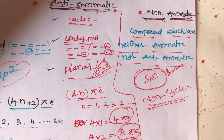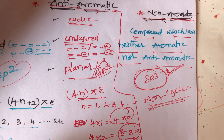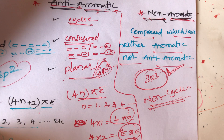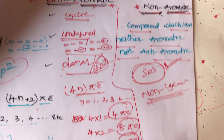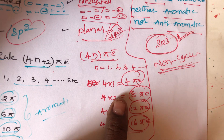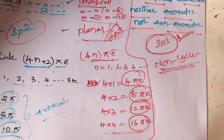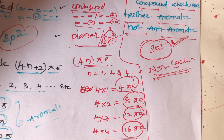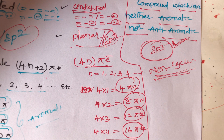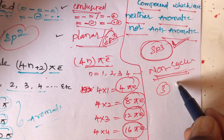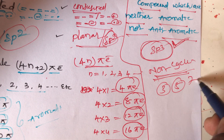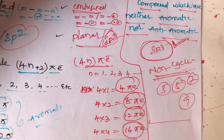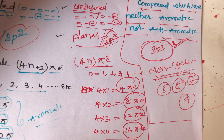In non-aromatic compounds, the pi electron count is an odd number — 3, 5, 7, or 9 electrons — unlike aromatic (2, 6, 10, 14 pi) and anti-aromatic (4, 8, 12, 16 pi). These are the important distinctions between aromatic, anti-aromatic, and non-aromatic compounds.